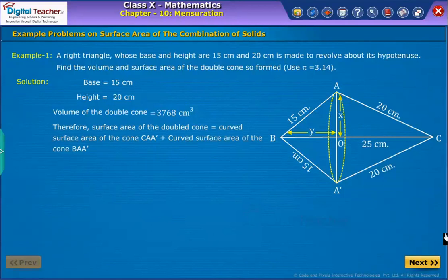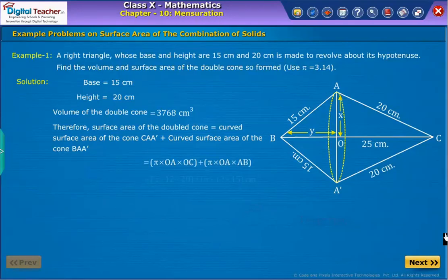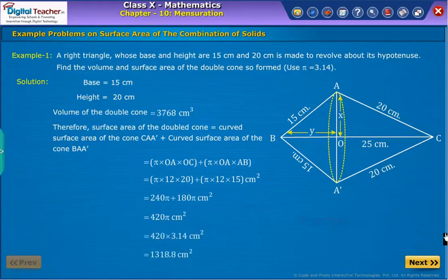Similarly, to find the surface area of the doubled cone, add curved surface area of cone CAA dash and curved surface area of cone BAA dash. By substituting the values, we get surface area of the doubled cone equal to 1318.8 square centimeters.